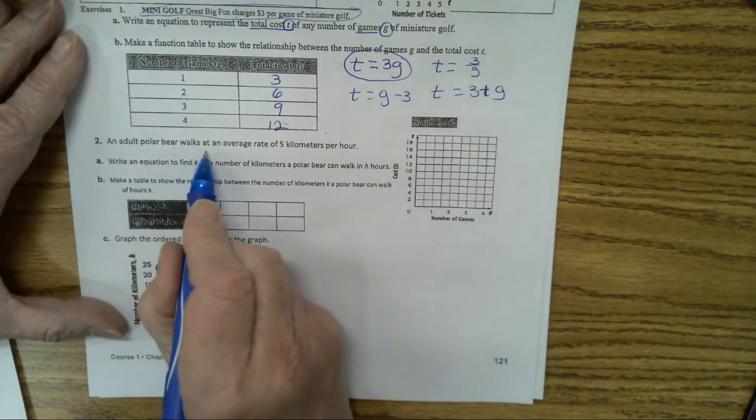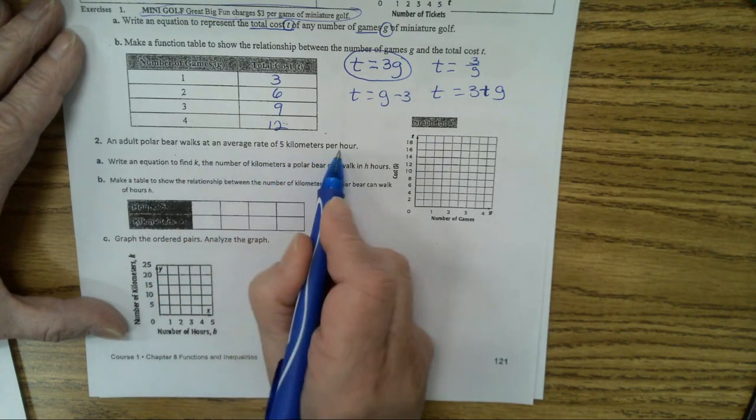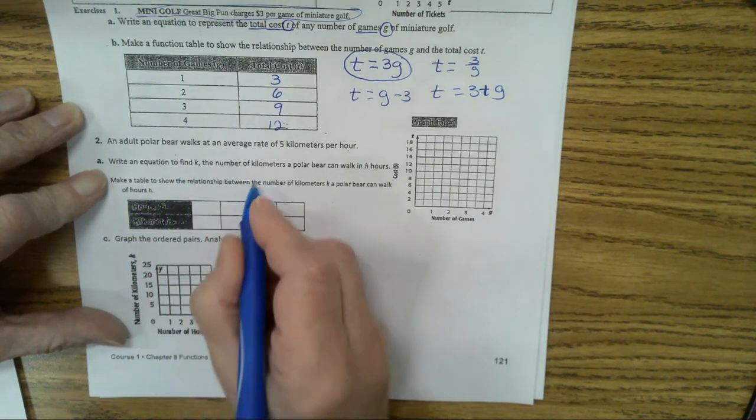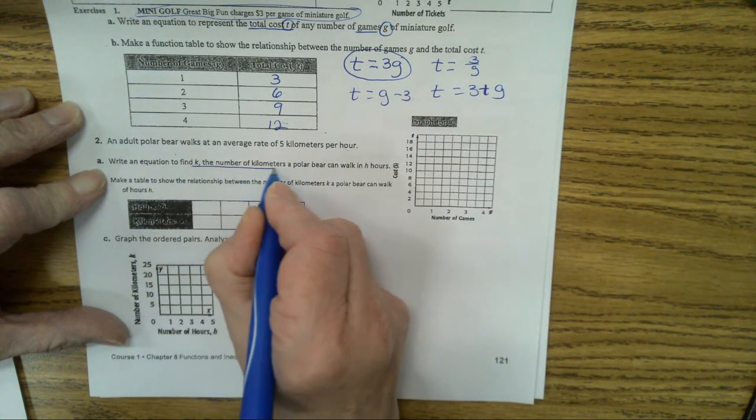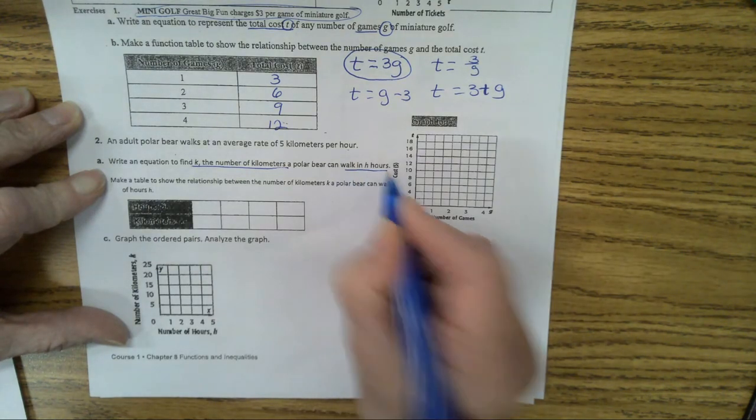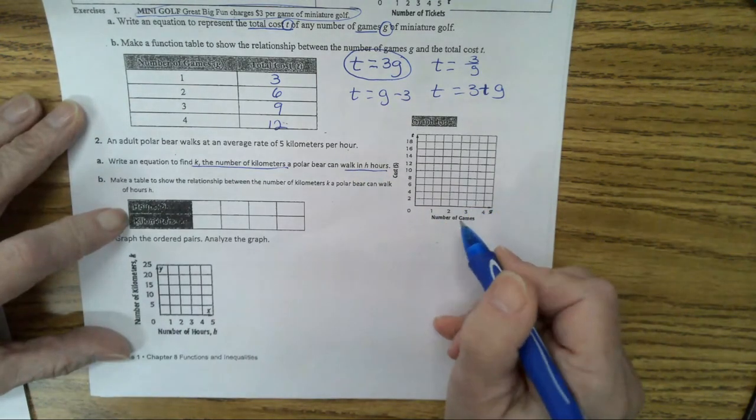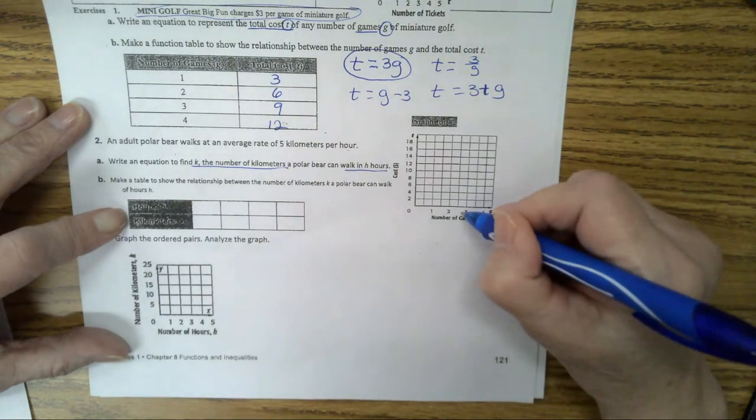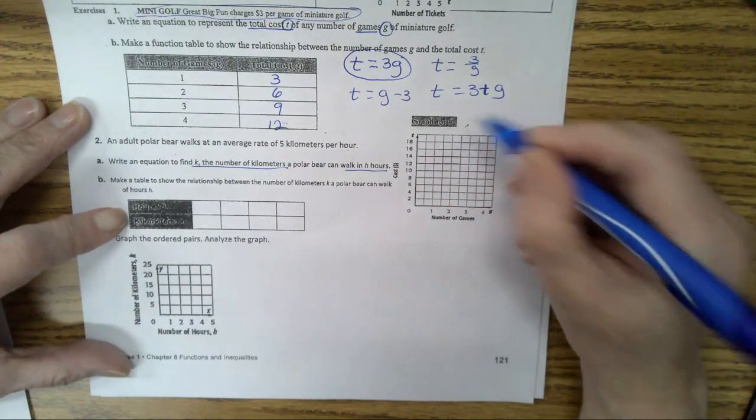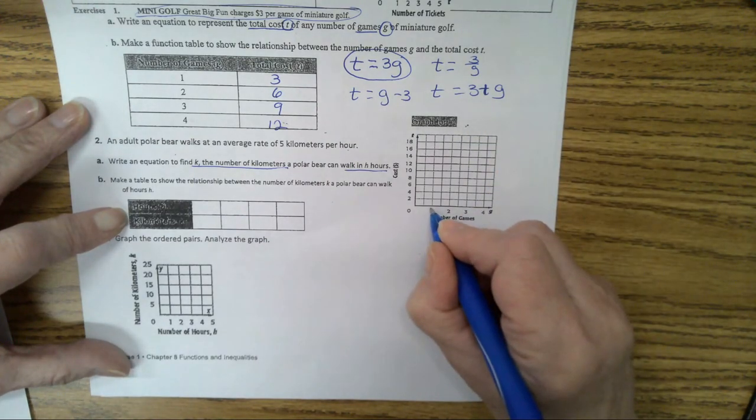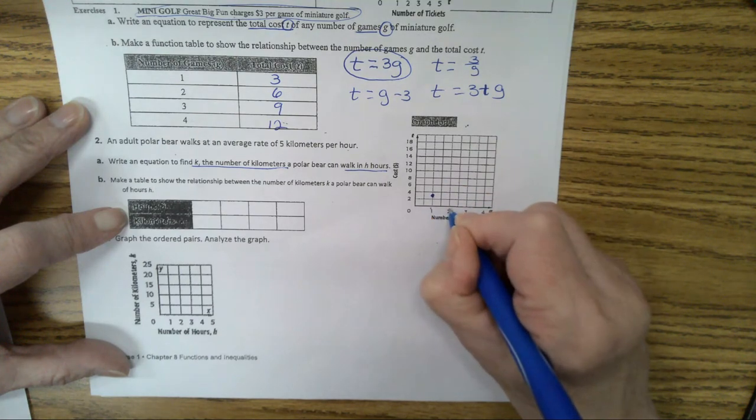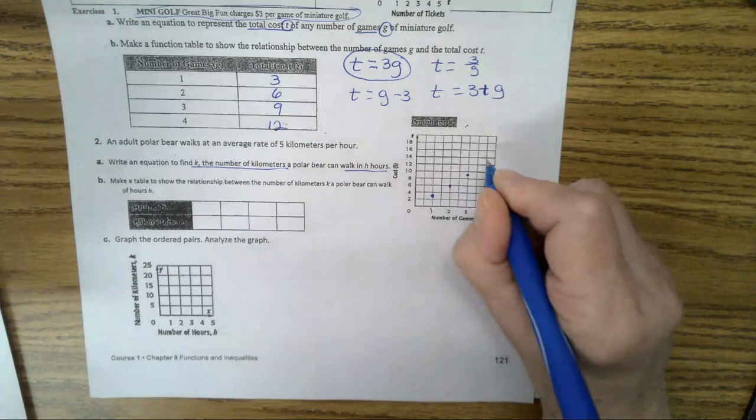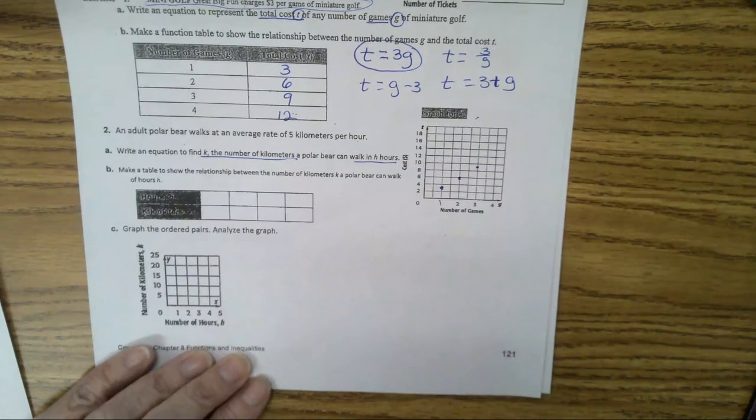An adult polar bear walks at an average rate of five kilometers per hour. That's their fact. Write an equation to find K. K is the number of kilometers. A polar bear can walk in H hours. Make a table. So here we. This is where you graph for number one. This is number one's graph. So one game we said was three. Two games is six. And three games is nine. It's time to go. Have a great weekend. And I will finish recording this later.